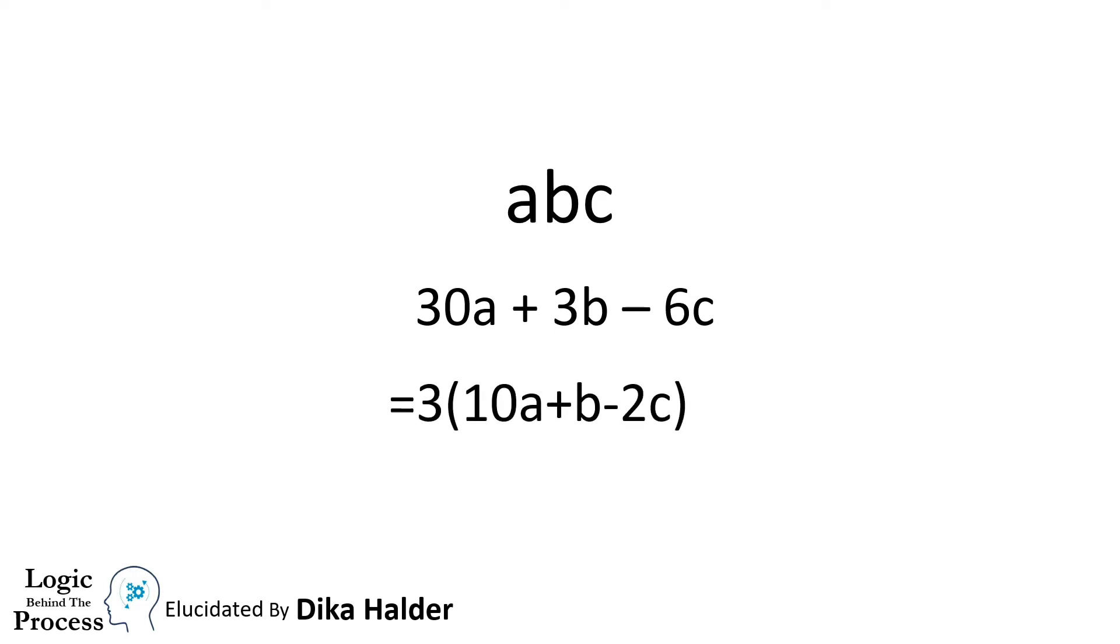We can take 3 common. If this part is divisible by 7, then this complete part will also be divisible by 7, as here we have a multiplication sign and the complete part will be a multiple of 7. Now all our focus is on this part.